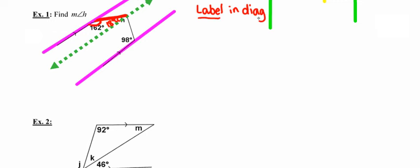The bigger your pictures are, the more helpful they'll be. Looking at the red transversal with the purple line on top and the green parallel line, their co-interior (same-side interior) angles have to be supplementary. Because one of those angles measures 162 degrees, the angle formed by the green parallel line and the red transversal is the supplement: 18 degrees. It's critical that you label everything in the diagram, even if 18 degrees isn't the final angle you're looking for.